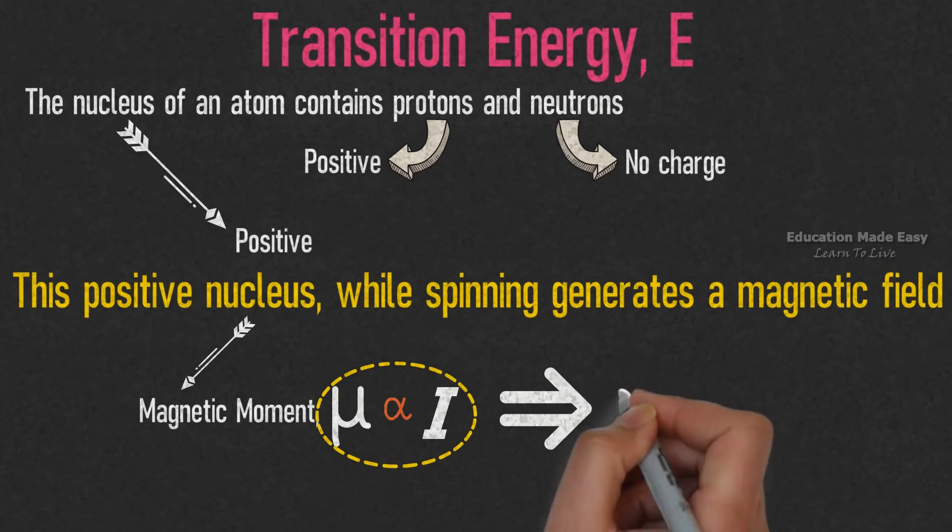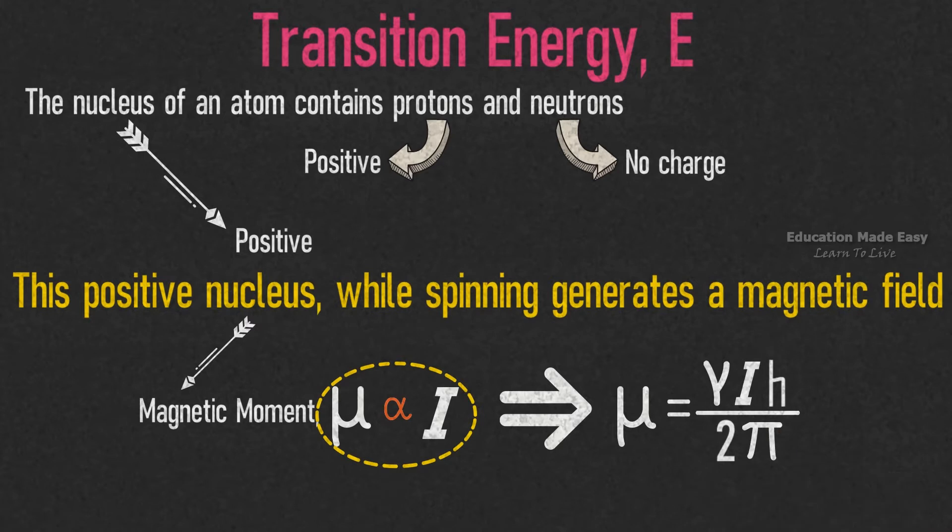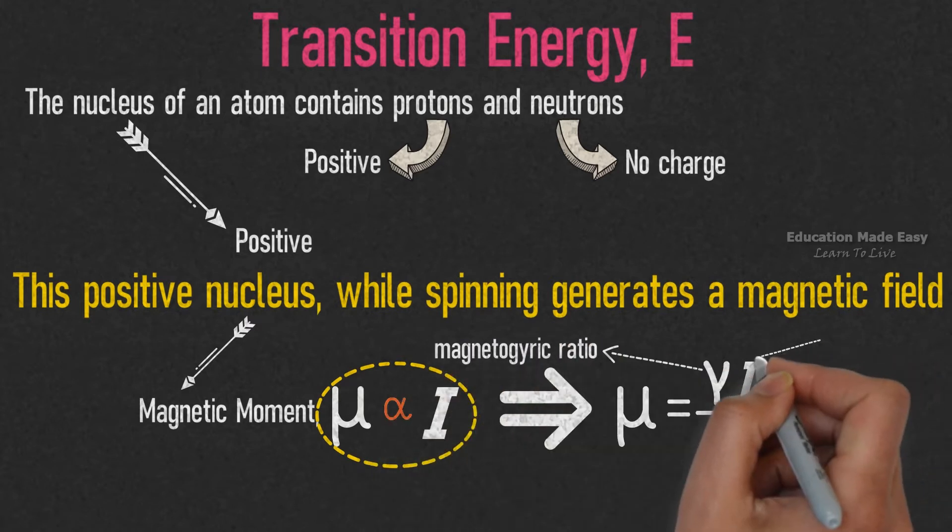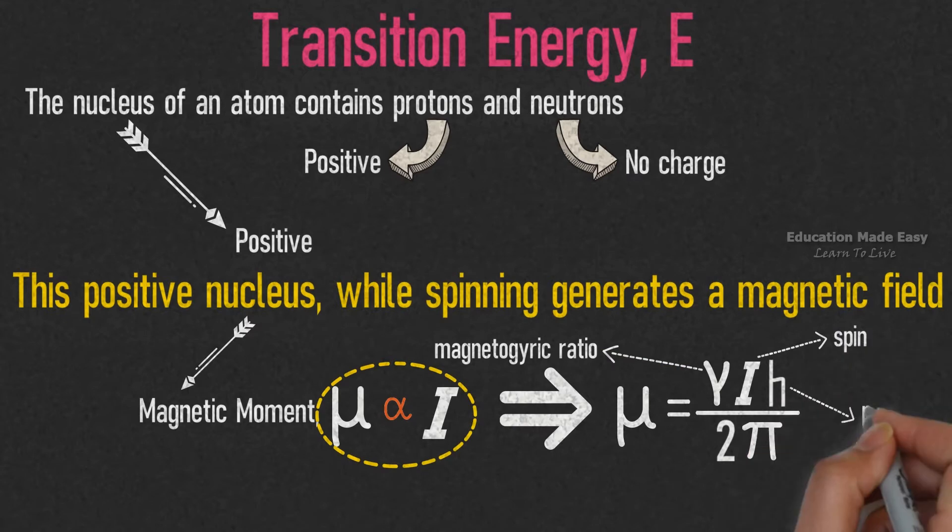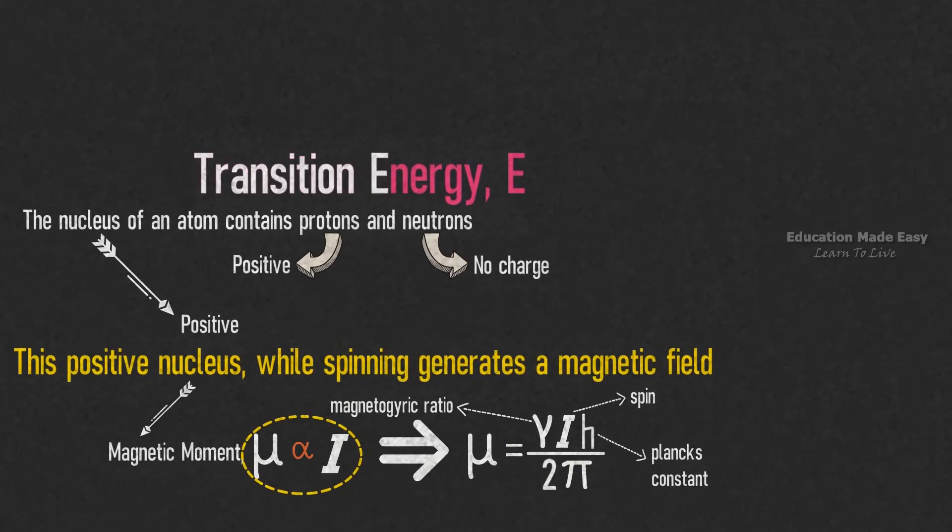Thus, μ proportional to I becomes μ equal to γ times I times h divided by 2π, where γ is the magnetogyric ratio, I is the nucleus spin, and h is Planck's constant. Now let's write the equation for transition energy E in terms of μ.